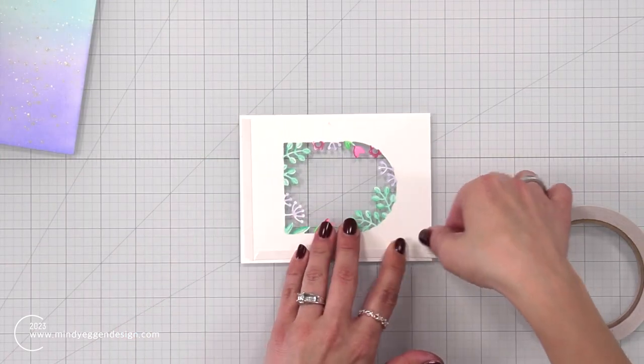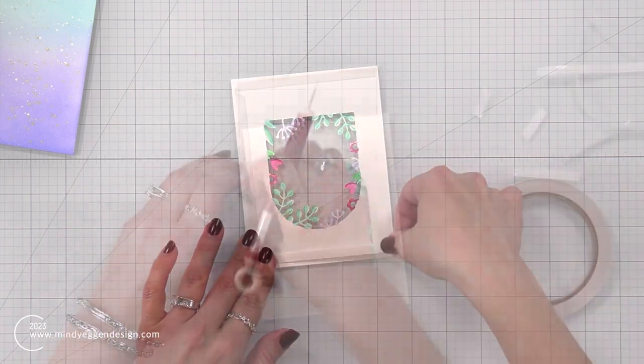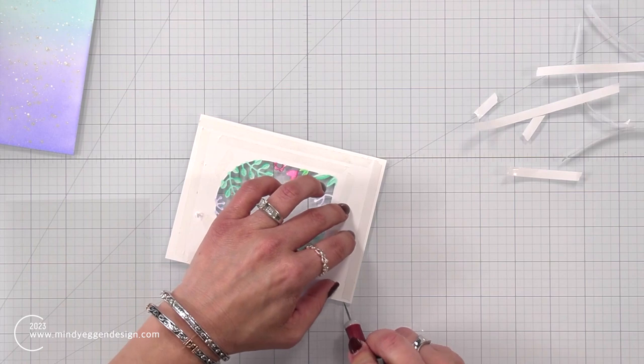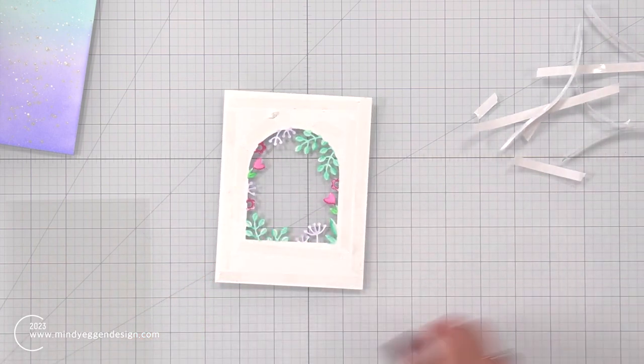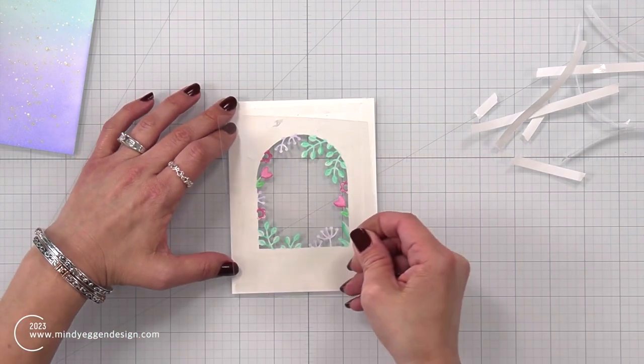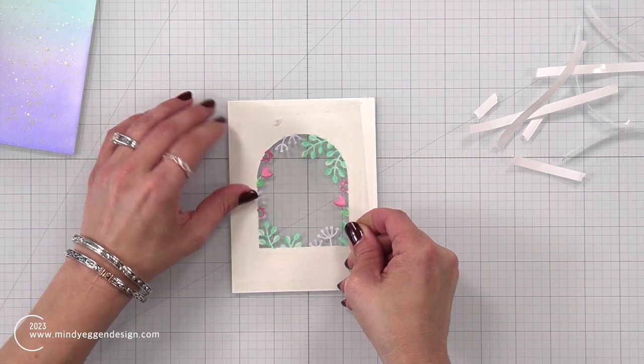And then back to my window, I'm going to line the entire back of my window with some double-sided tape. And then I'm going to peel that back. I like to use my craft pick to help move that release paper. And I have a piece of acetate cut to 4 1⁄4 by 5 1⁄2 that I'm going to place over that.